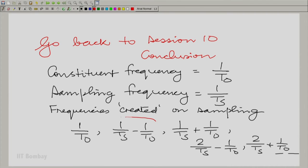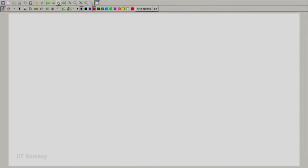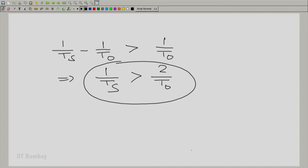And of course, the first difficulty comes from here. So, these two can clash first. And therefore, we saw there that you needed to have 1/Ts minus 1/T0 strictly greater than 1/T0, which meant that the smallest 1/Ts that you could use should be greater than 2/T0.